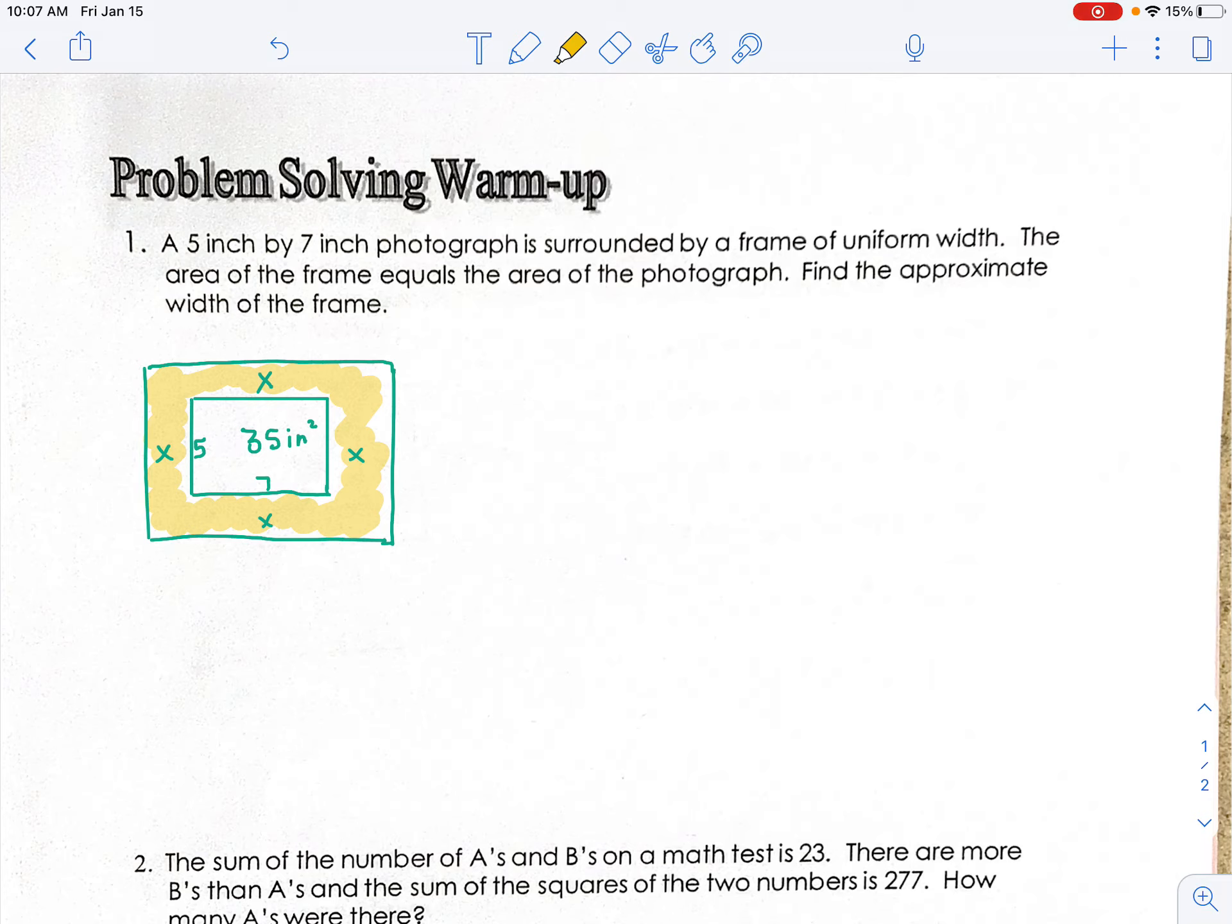The area of this is equal to the area of the photograph, which is 35. So we need to find the approximate width of the frame. Now here's the issue, we don't know what x is.